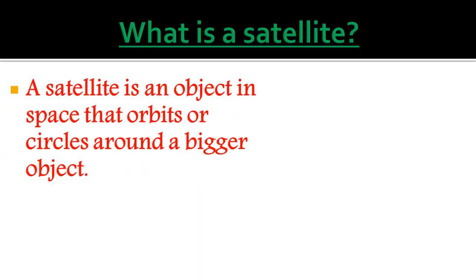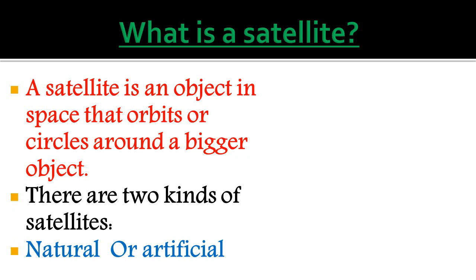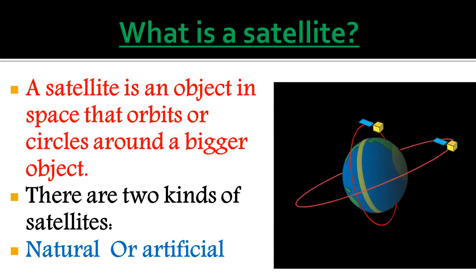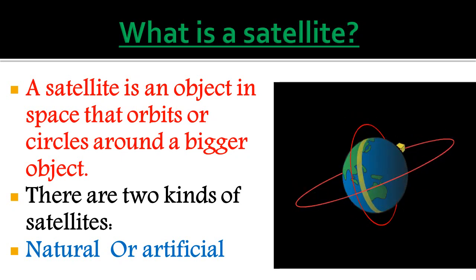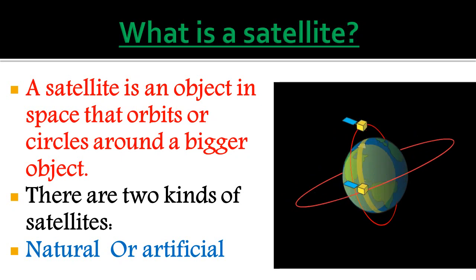What is a satellite? A satellite is an object in space that orbits or circles around a bigger object or planet. There are two kinds of satellites: natural and artificial. The Moon is a natural satellite of the Earth. Alongside you can observe the planet Earth and two orbits, with satellites revolving around it — these represent artificial satellites.